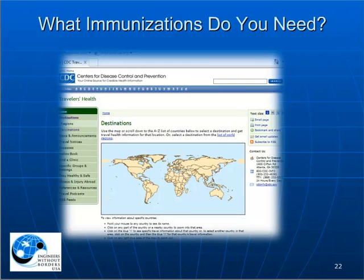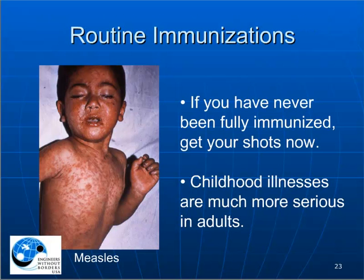A good travel medicine clinic will recommend which immunizations you need. You can also go online to the CDC.gov website, click on the destination country, and learn about immunizations, malaria, and other health and security issues. To determine what immunizations you've had, your best sources are your parents and your own doctor. Many adults in the United States have never been immunized and have never gotten routine childhood illnesses. These diseases are now rare in developed countries because of immunizations, but unimmunized adults traveling to less developed countries may get measles, mumps, diphtheria, polio, or whooping cough — diseases far more dangerous in adults than in children. So if you've never been fully immunized, get all these vaccines before you travel.